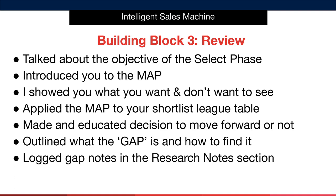First of all, we talked about the objective of the select phase, and I introduced you to the map. I showed you what you want to see and also what you don't want to see. We then applied the map to your shortlist league table and made an educated decision to move forward or not with the product. I then outlined what the gap is and how to find it, and we logged our gap notes in the research notes section of the Google Sheet.